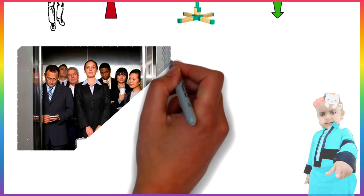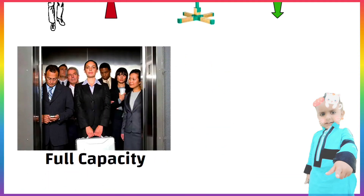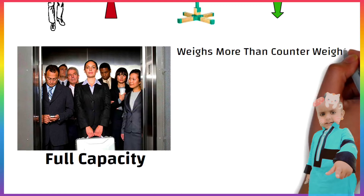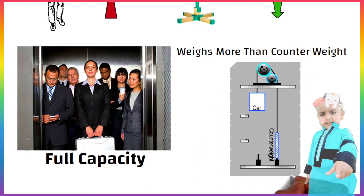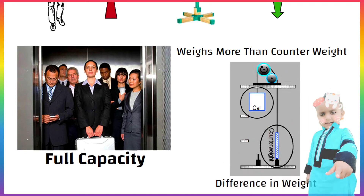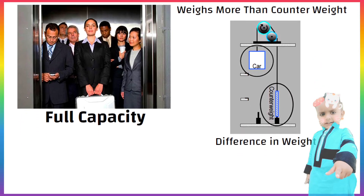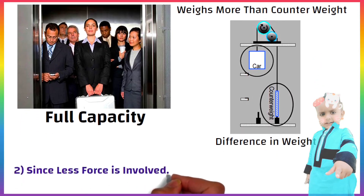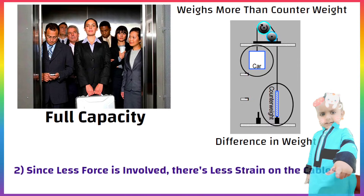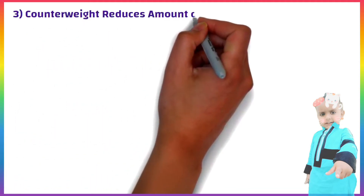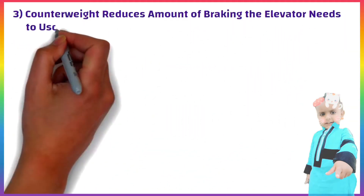Suppose the lift is loaded at full capacity, meaning it weighs more than the counterweight. In this case, the motor has to lift the difference in weight between the two and supply a bit of extra force to overcome friction in the pulleys. Since less force is involved, there is less strain on the cables, which makes the elevator a little bit safer. The counterweight also reduces the amount of braking the elevator needs to use.